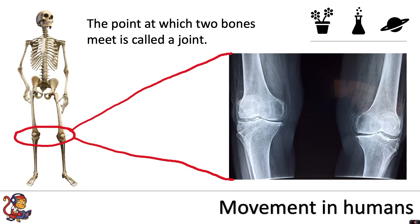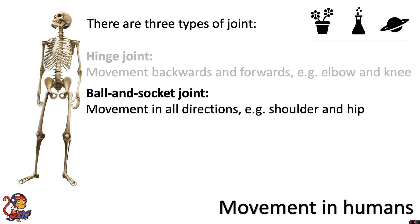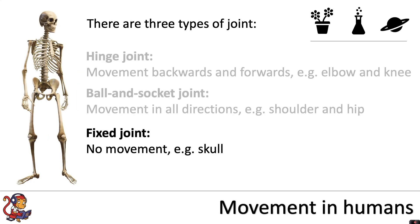The point at which two bones meet is called a joint. There are three types of joints. First, the hinge joint, which allows movement backwards and forwards — for example, the elbow and the knee are both hinge joints. Then you have the ball and socket joint, which allows movement in all directions — for example, the shoulder or the hip. And finally, fixed joints, which allow no movement — for example, the skull.